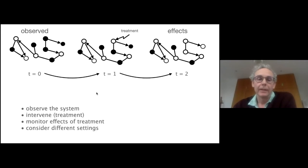Some kind of treatment is selected and you intervene on particular nodes or sometimes even on connections. You want to then monitor what the effects are, on what other nodes of relevance does this affect. We often consider different settings so a treatment is given, a particular variation of it is given.